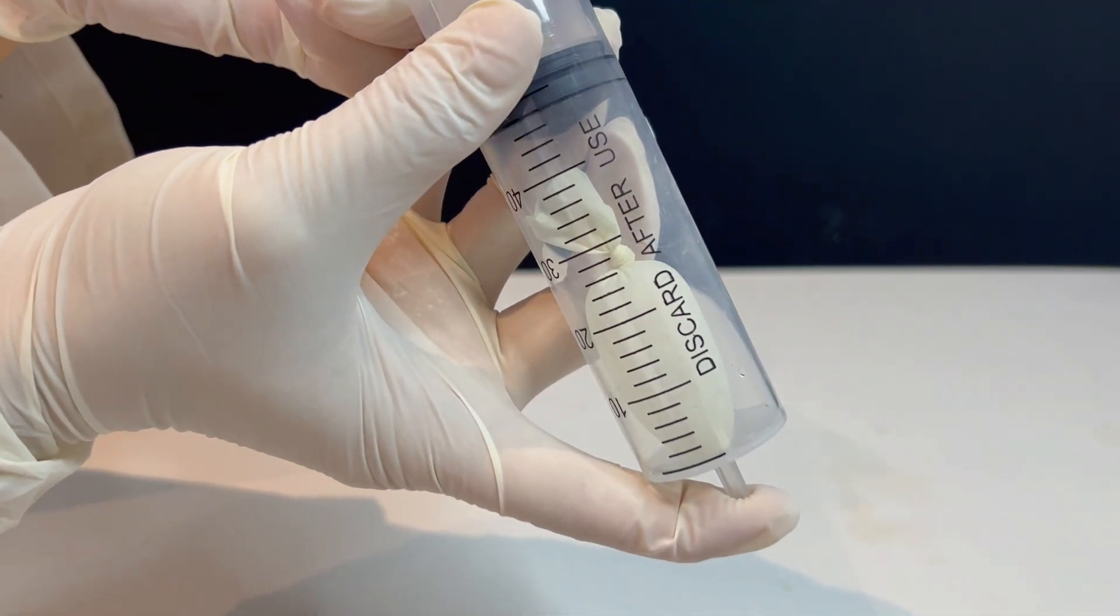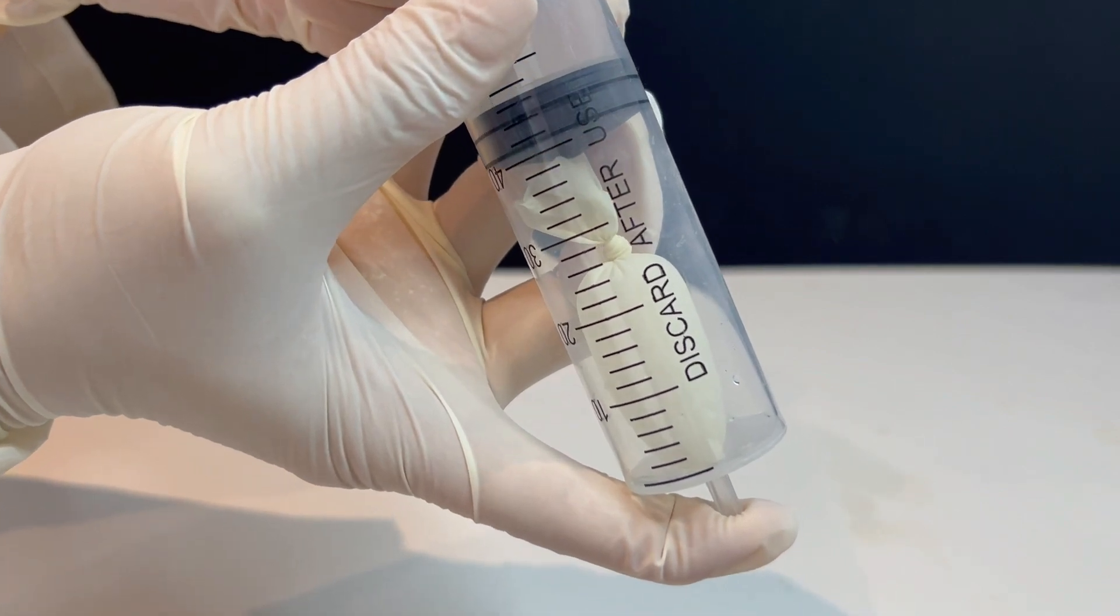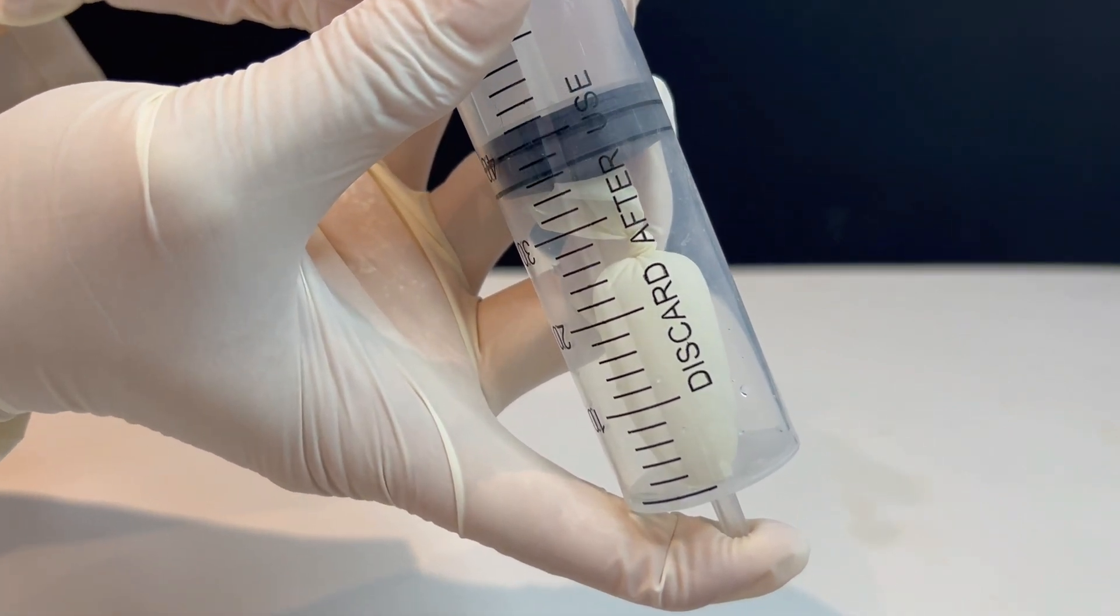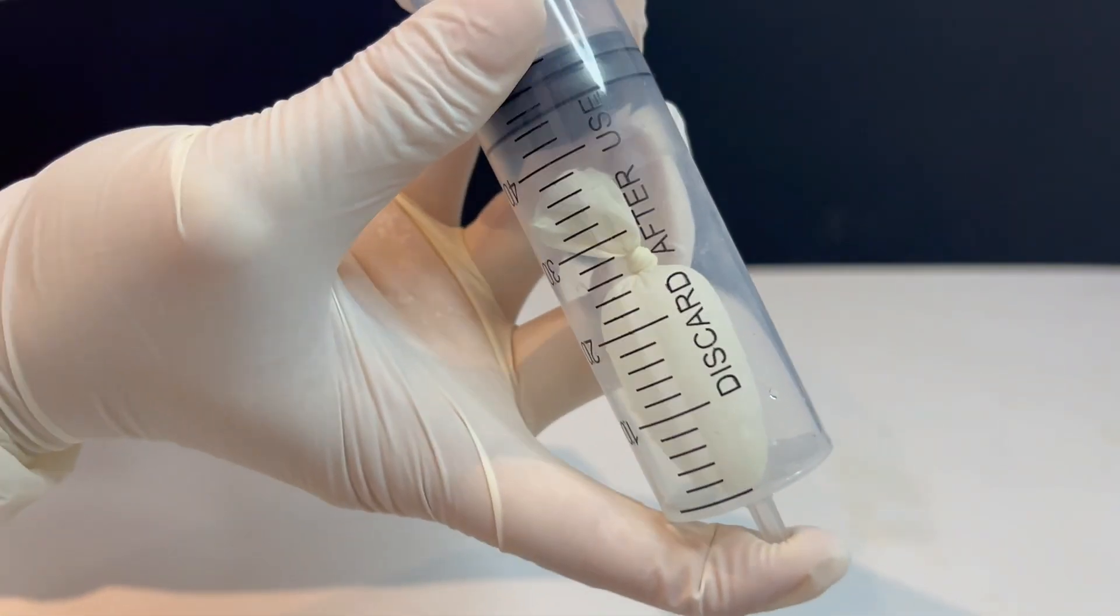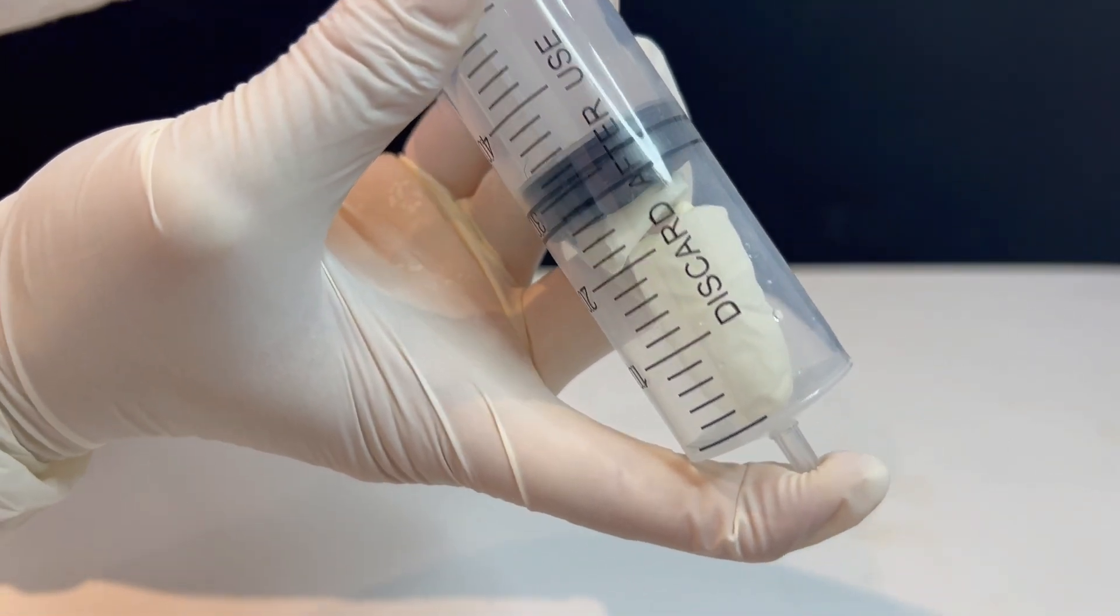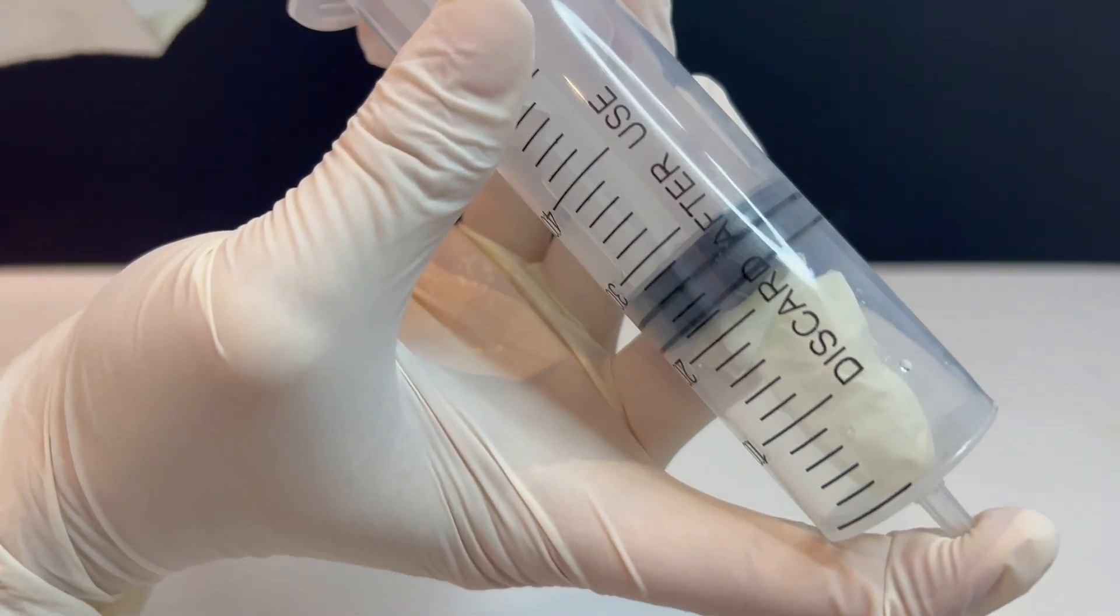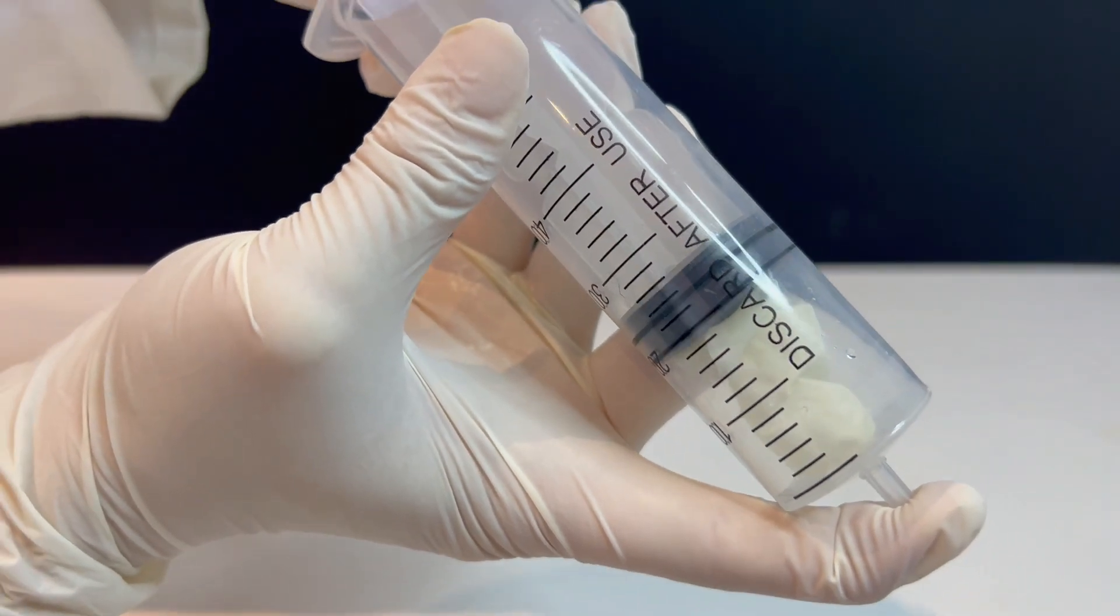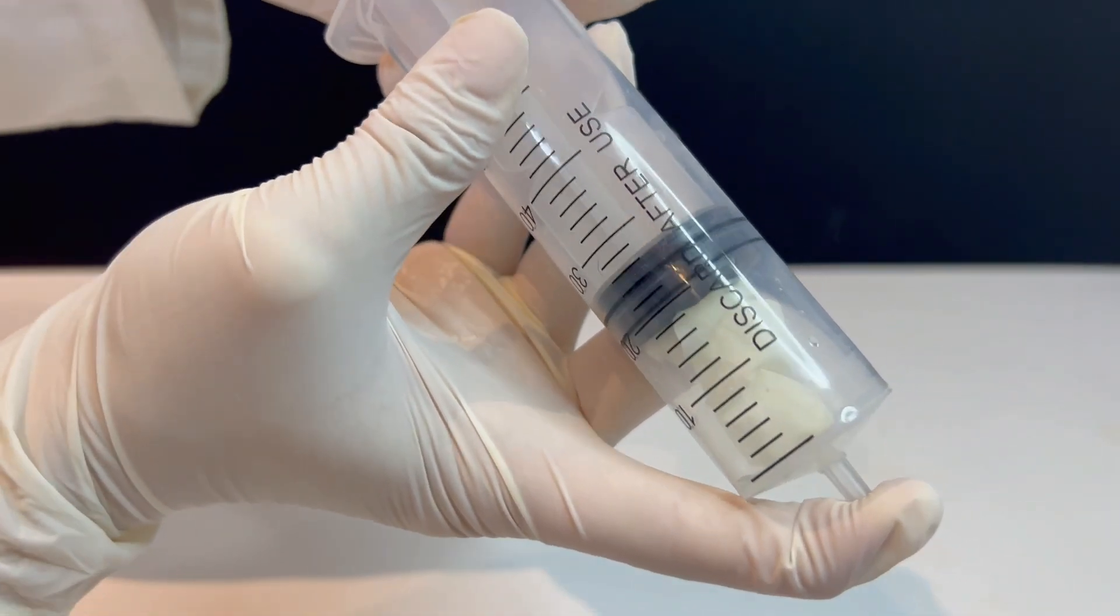Now, watch what happens when I press the plunger down. The volume inside the syringe decreases, and as a result, the pressure of the trapped air increases. You can see how the small balloon shrinks. The reason for this is that the air particles inside the syringe are forced closer together. They collide more often with the walls of the balloon, creating higher pressure, which causes the balloon to compress.